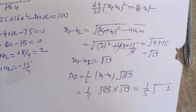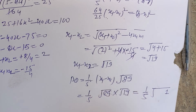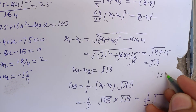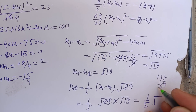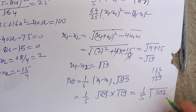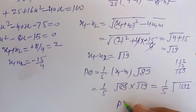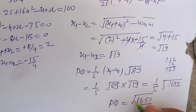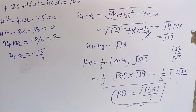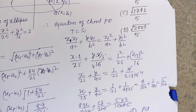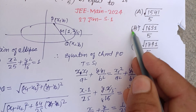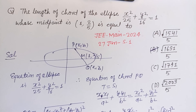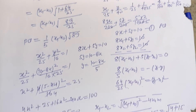Computing 19 × 89 = 1691, so PQ = √1691/5. The length of the chord is √1691/5, which matches option B. Therefore option B is correct. I hope you got it — please like the video, subscribe to the channel, thanks for watching.